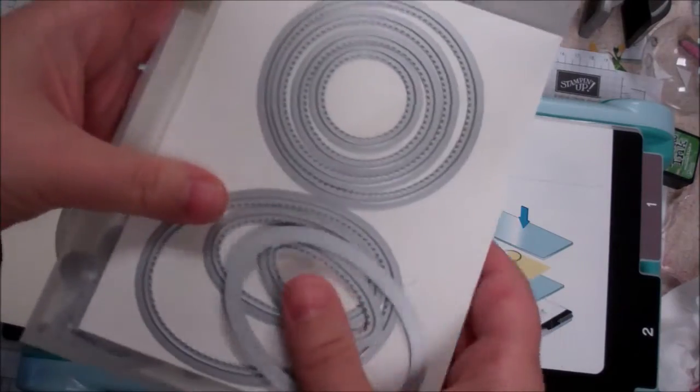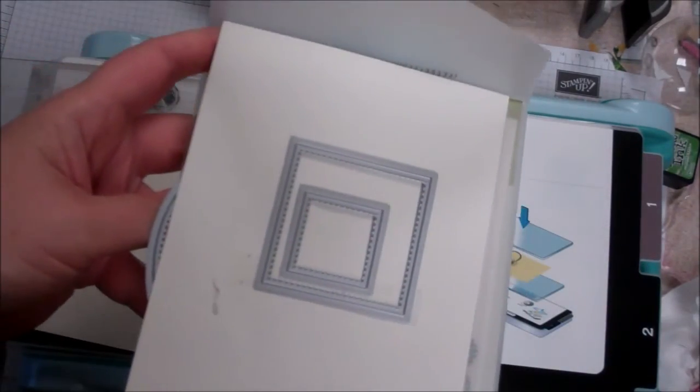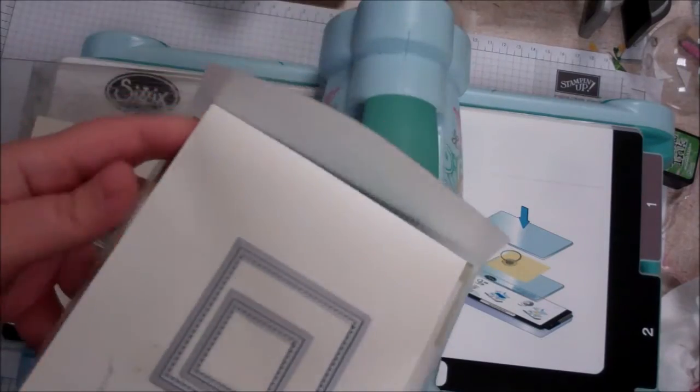You get four circles, four ovals, and four of the square dies. But one shape we're missing? Rectangles!